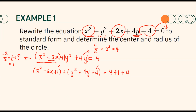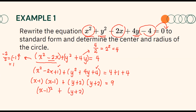Next, we factor the two perfect square trinomials. Recall that the factors of x squared minus 2x plus 1 are x minus 1 times x minus 1. Then we factor y squared plus 4y plus 4, which gives us y plus 2 times y plus 2. Simplifying the right side gives us 9. Since the factors are the same, we may write our equation as x minus 1 quantity squared plus y plus 2 quantity squared equals 9.